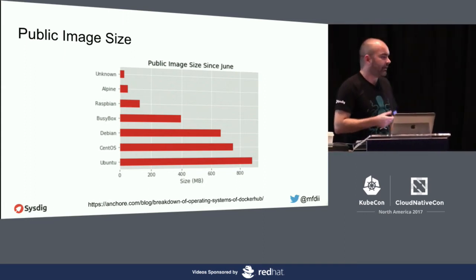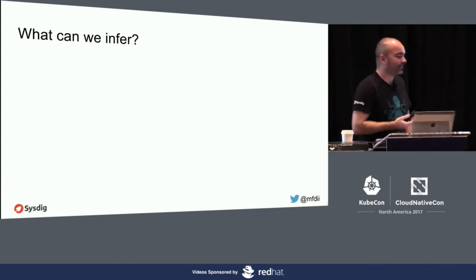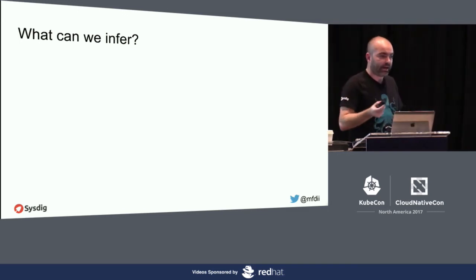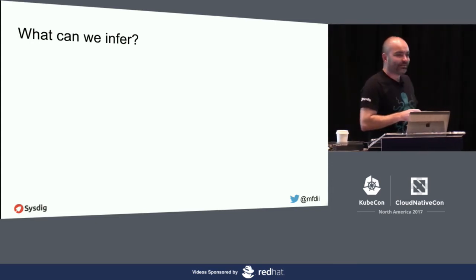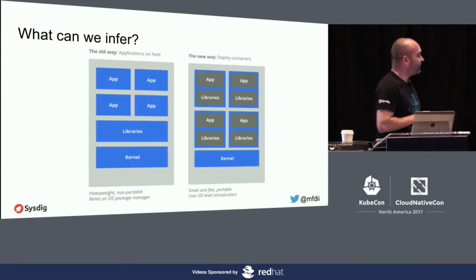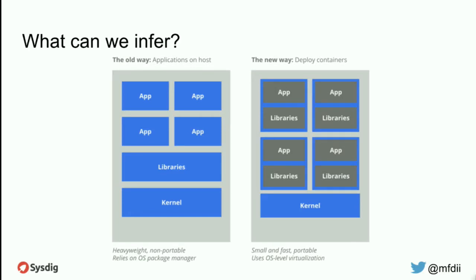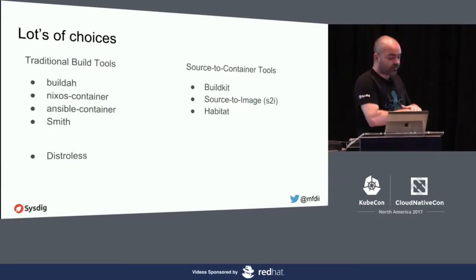What can we infer from this? Use Alpine, use BusyBox, or optimally use Scratch if you can, and build off that. Or just rewrite your entire application stack in Go and statically compile everything. What you really need is just the app and the libraries — you don't need all the other stuff carried forward from the last generation of running operating systems. Nobody knows how to package their application in a container.